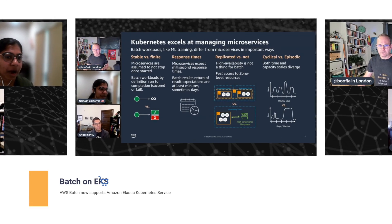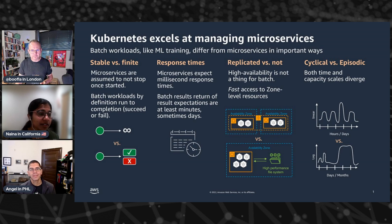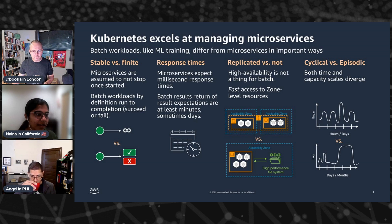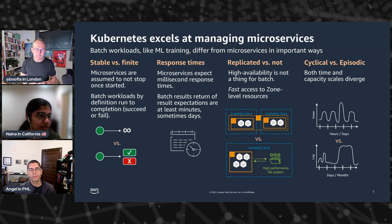A lot of customers we talk to say they're standardizing Kubernetes across their company, and a lot of the use cases are geared towards microservices. But when they're running things like ML training or any kind of simulations, they're so different from microservices — more like a batch workload where you want a different set of requirements. When you think of microservices, they're constantly available for responding to a request. But batch workloads have a start and an endpoint — success or sometimes failure — versus microservices which are consistently available.